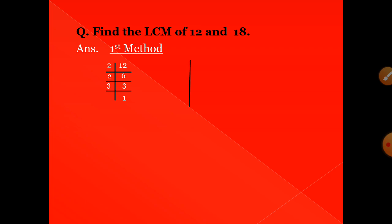Now find the prime factorization of 18. 18 is divisible by 2 — 2 nines are 18. You got 9; 9 is in the 3 times table, so divide by 3 — 3 threes are 9. Then 3 is a prime number, divide by 3 — 3 ones are 3. So the prime factorization of 18 is: 18 = 2 × 3 × 3.